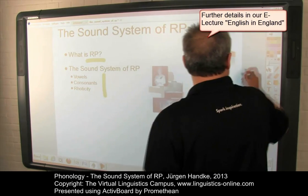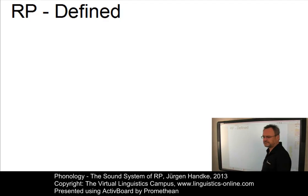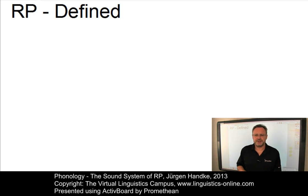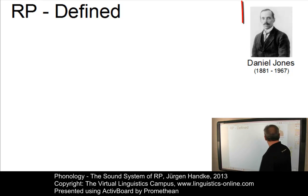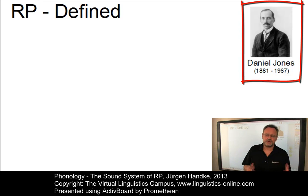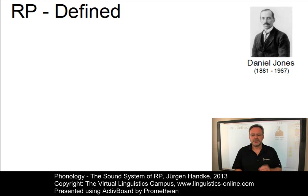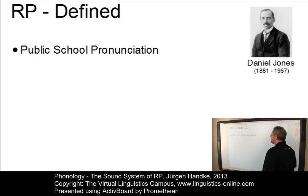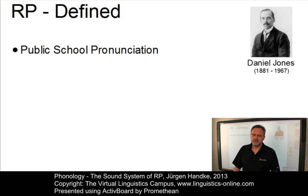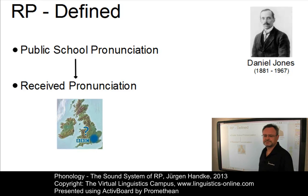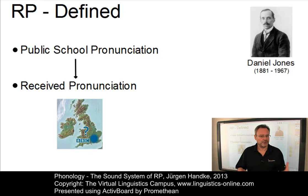Let us start with a brief overview of RP. Early in the 20th century, Daniel Jones described RP as the accent spoken by the socially and economically dominant London society. This clearly reflects the social considerations of his time. He initially named it Public School Pronunciation.